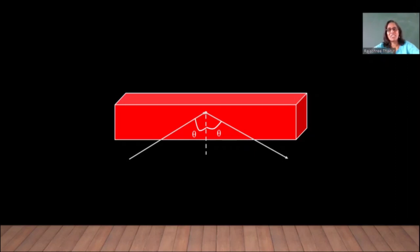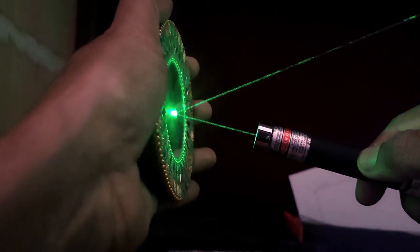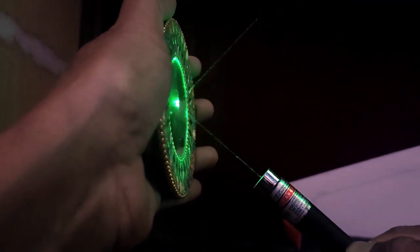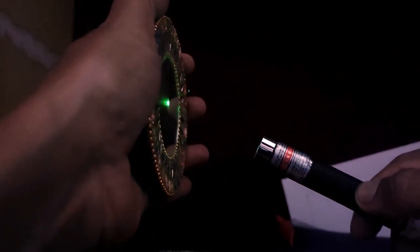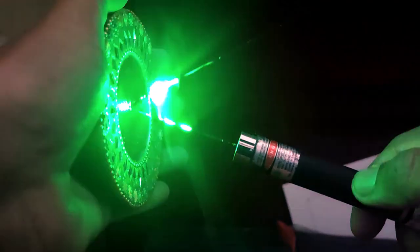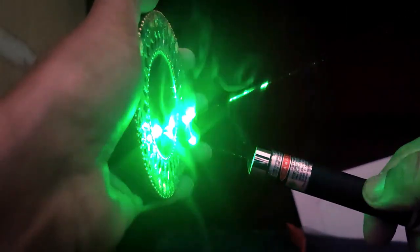In this video, you can see a plane mirror, an incident laser beam and a reflected beam. The smoke of Agarbatti is used so as to make the path of the laser beam visible. You can see, as I increase the angle of incidence, angle of reflection also increases. As I decrease the angle of incidence, you can see the angle of reflection also decreases.